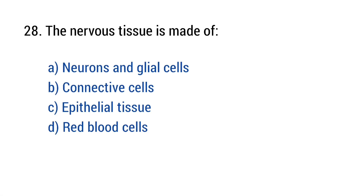Question number twenty-eight. The nerve tissue is made of. The right answer is option C: Neurons and glial cells.